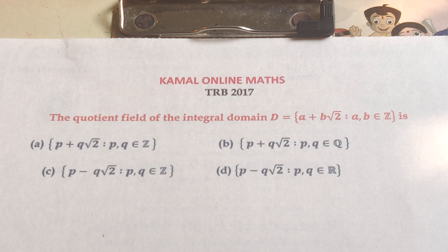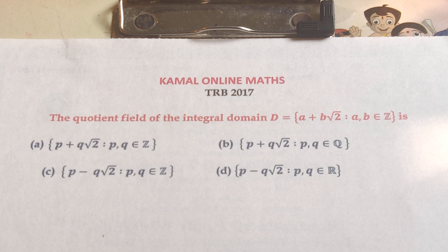The options are: (A) P plus Q root 2 where P and Q are in ℤ, (B) P plus Q root 2 where P and Q are in ℚ, (C) P minus Q root 2 where P and Q are integers, (D) P minus Q root 2 where P and Q are real numbers.